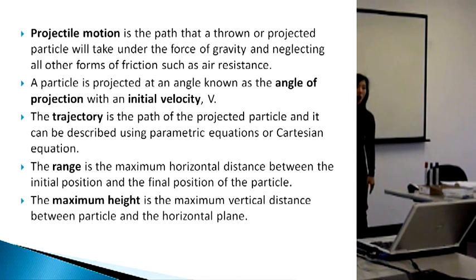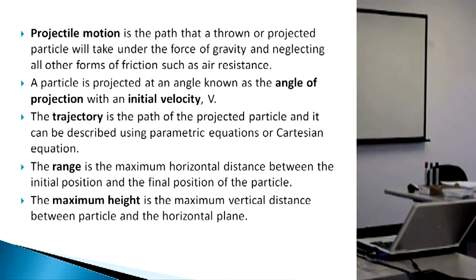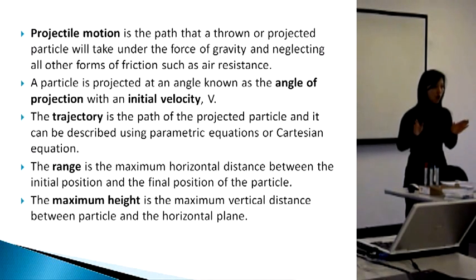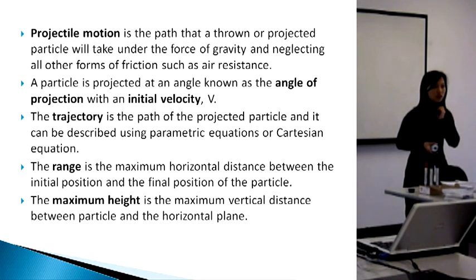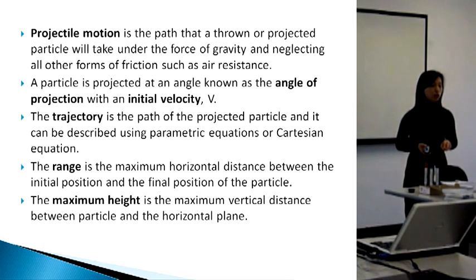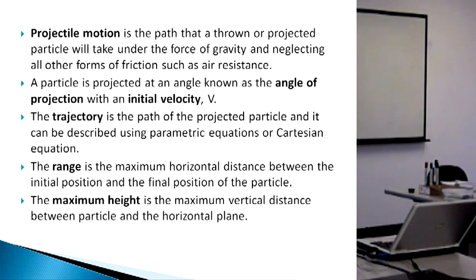The maximum height is the maximum point between the path and the ground level — it's always to the ground level. You need to know all this terminology because in the questions they will ask you what is the maximum height. The trajectory is the path — the path that the parabola takes. In mathematical terms, you express it using an equation, either in parametric form or in Cartesian form.